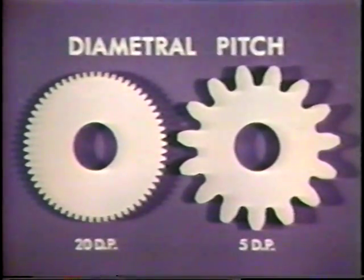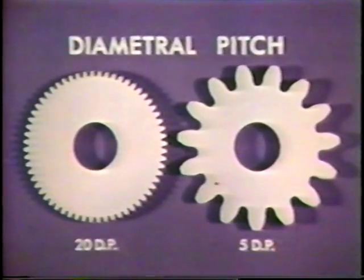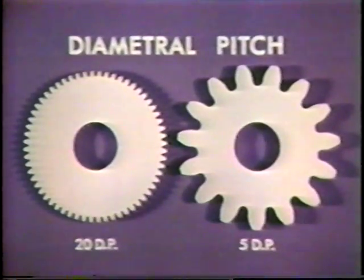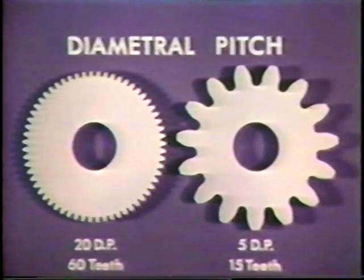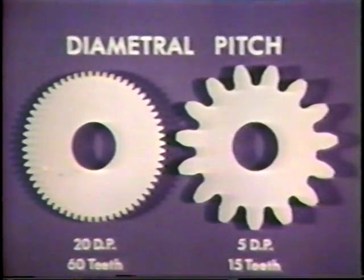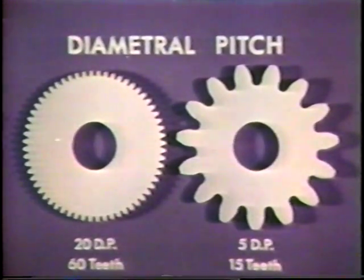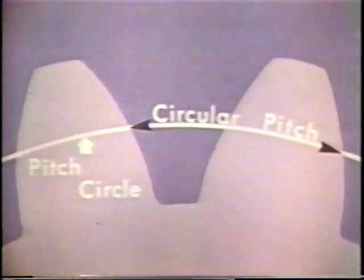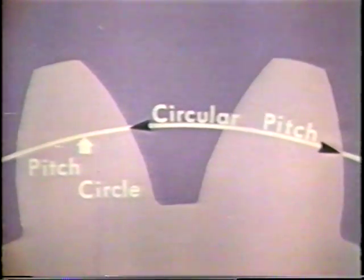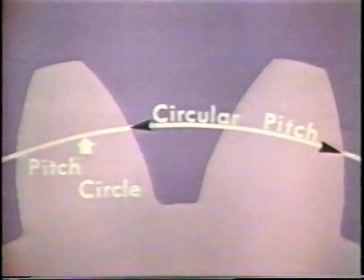Here are the definitions of some of the gear tooth elements as they apply to gears of conventional standard design. Tooth size is commonly expressed as diametral pitch, which represents the number of teeth per inch of pitch diameter of a gear. Each gear has a three inch pitch diameter, but the difference between outside diameters, the number and size of the teeth, is obvious. Tooth size can also be expressed as circular pitch — the distance between corresponding profiles of adjacent teeth as measured on the pitch circle. Circular pitch equals pi divided by the diametral pitch.